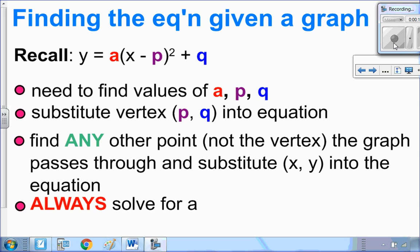So just to review what the vertex form is, it's A, X minus P squared plus Q. And to find the equation, I need to know what A, P, and Q are. So I leave X and Y in general for the equation.